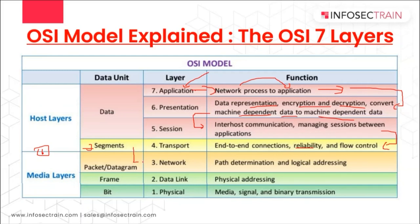At the Network Layer, the IP is added to the packets. The path for those segments to travel is determined. If the communication protocol is TCP, packets are created; if UDP, datagrams are created. The path is determined and the logical addressing — the IP addresses — is assigned. These IPs are the unique identifiers indicating where the data needs to be sent.